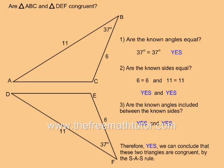In this example, are triangle ABC and triangle DEF congruent? Question 1 says, are the known angles equal? Both triangles have a 37 degree angle. Yes, the known angles are equal.